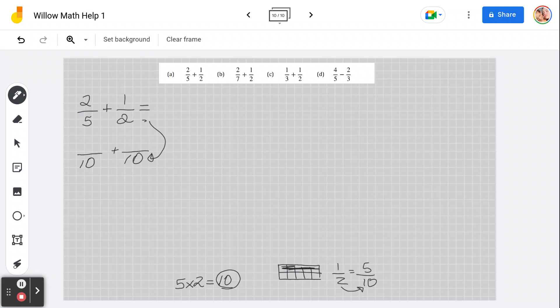What do I do to the top? Whatever I do to the bottom, I have to do to the top. That's the rule with adding and subtracting fractions. So if I multiplied 2 by 5 to get 10, then I have to multiply my top by 5. So 1 times 5 is 5. See how we got it down here?